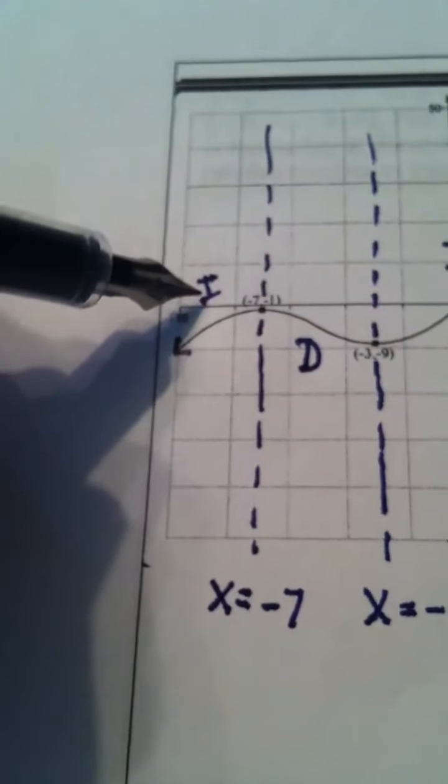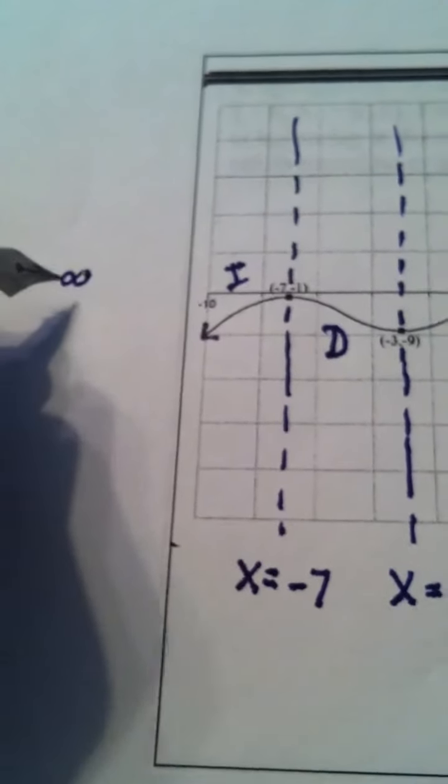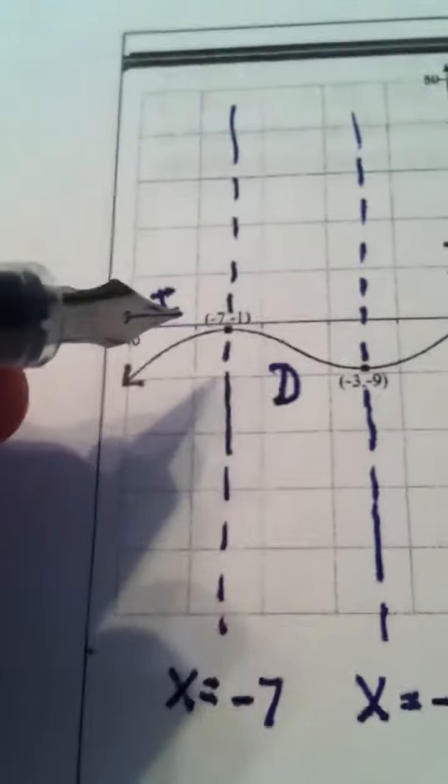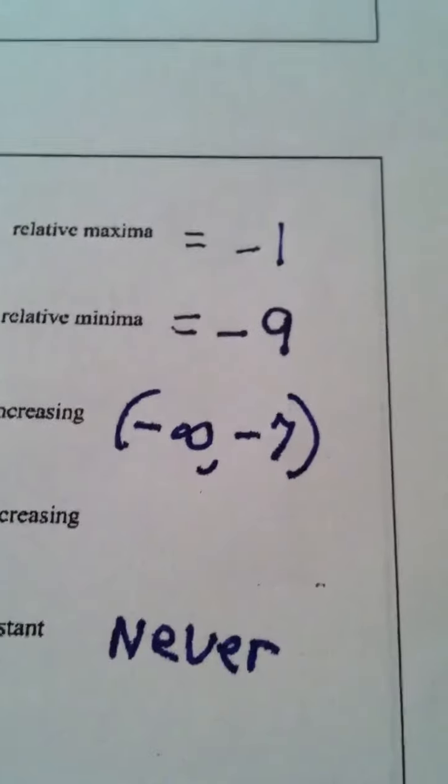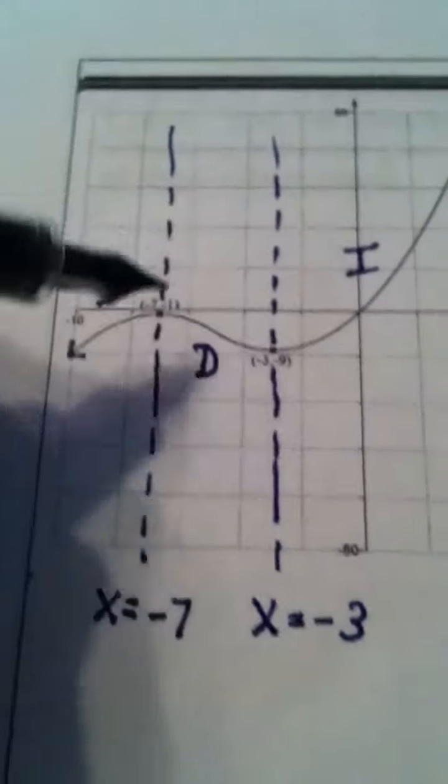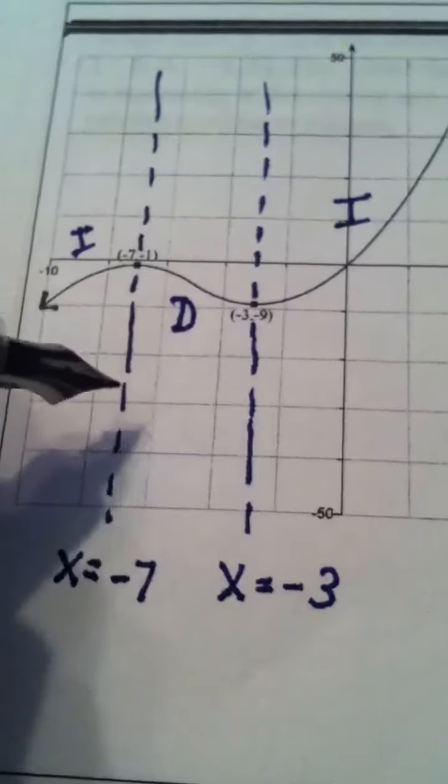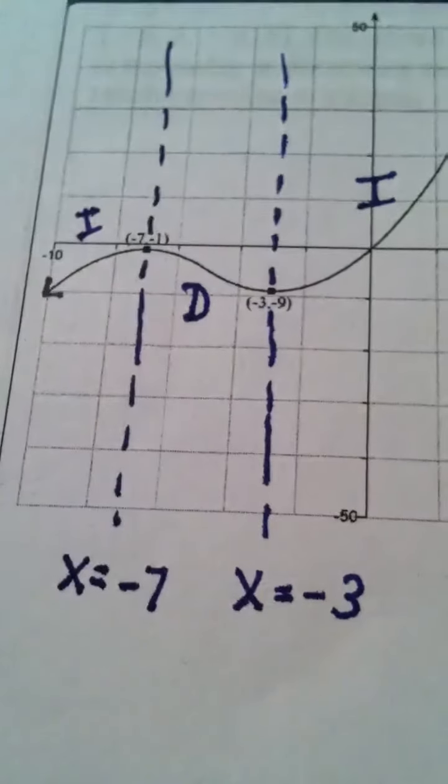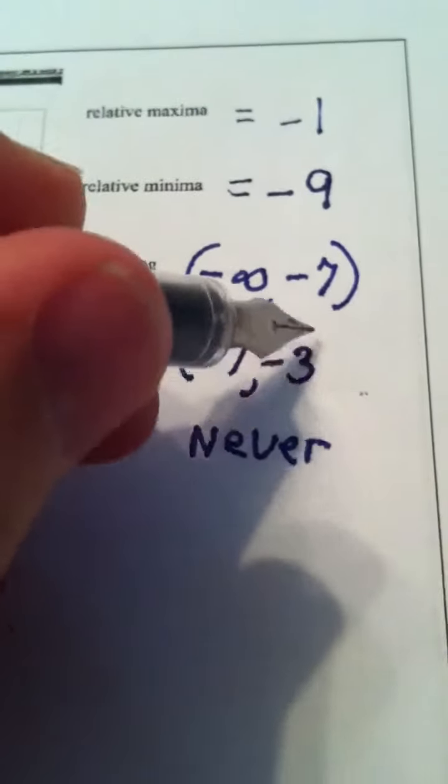So let's answer increasing. I'm scanning from left to right, so I'm coming from negative infinity, and then I hit the x value of negative 7. And that's my breaking point. So it's increasing from negative infinity to negative 7 with a paren. And then, again, no bracket, the graph is dropping between these two x values. And again, if we read from left to right, it's decreasing from negative 7 to negative 3. We're scanning from left to right. So it's decreasing from negative 7 to negative 3.